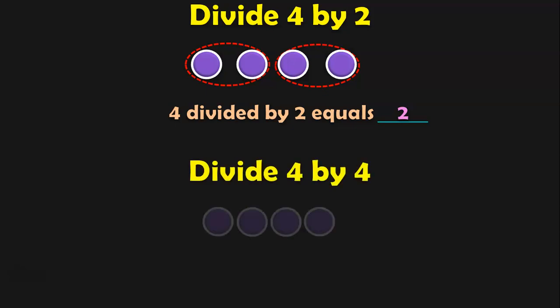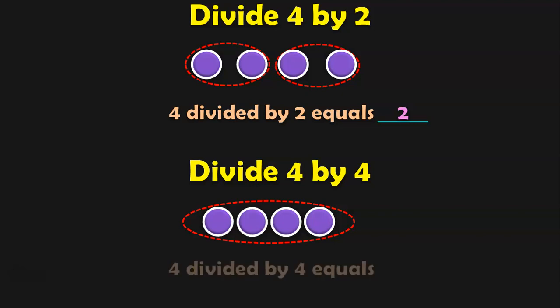Divide 4 by 4. I have 4 objects and I have to divide it by 4. So I will draw a circle or an ellipse around all 4 objects. Here I have drawn a circle around the 4 objects because it is divide 4 by 4. How many groups do I get if I do that? I will get 1 group which has all 4 objects. So 4 divided by 4 equals 1.